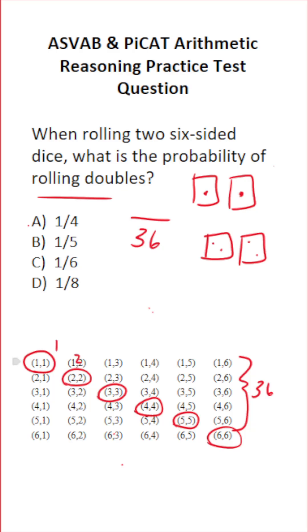These doubles appear 1-2-3-4-5-6 times. So our probability of rolling doubles is 6 over 36,